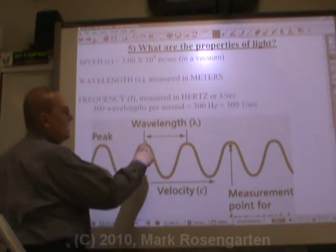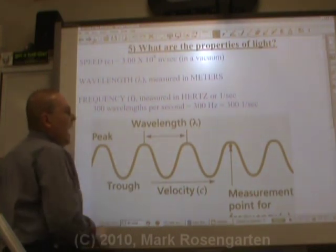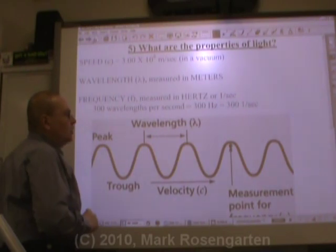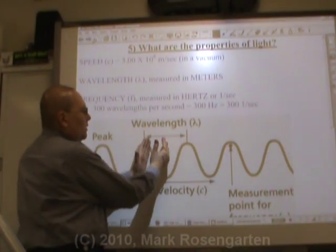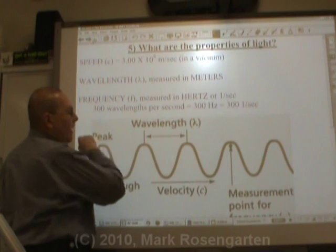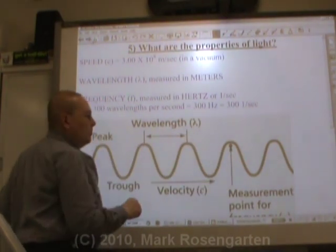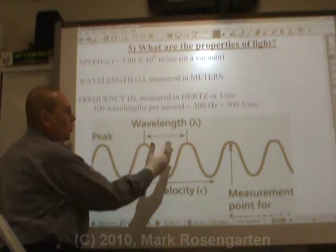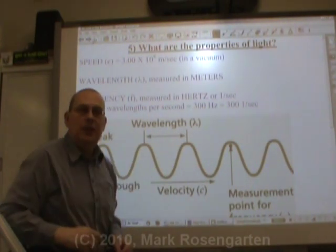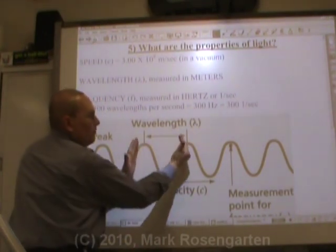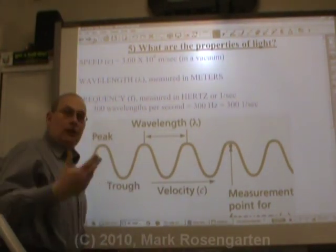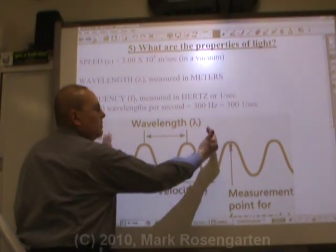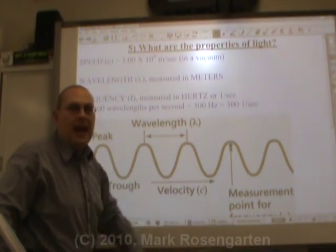The wavelength is the distance between two peaks, and the number of these peaks that pass you per second is the frequency. The shorter you make the wavelengths — because light always travels at the same speed — if you make the wavelength shorter, you're going to have higher frequency. Shorter wavelengths means more of those wavelengths can pass you in any second. If you make the wavelength longer, traveling at the same speed, fewer wavelengths will pass you per second, because the wavelengths themselves are longer, so it takes more time for them to pass.